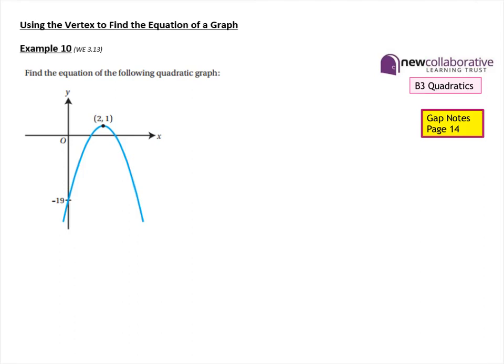The main focus of this video is to look at some examples where we are given a quadratic graph and we know the vertex of the graph plus some additional information. We're going to use that information to find the equation of the quadratic graph. Because we're given the vertex, we'll be considering this from the point of view of the completed square form, so the equation is going to be of the form a(x + p)² + q.